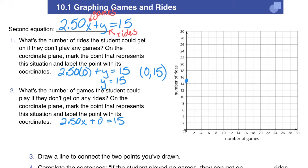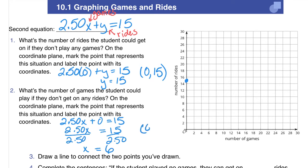In number 2, what's the number of games the student could play if they don't get on any rides? My y is 0, so I rewrite this as 2.5x equals 15. Dividing both sides by 2.5, I get x equals 6. So if we play 6 games, we ride 0 rides. On the graph, that point is right here, with the x-axis representing 6 and the y-axis with the number of rides up there.